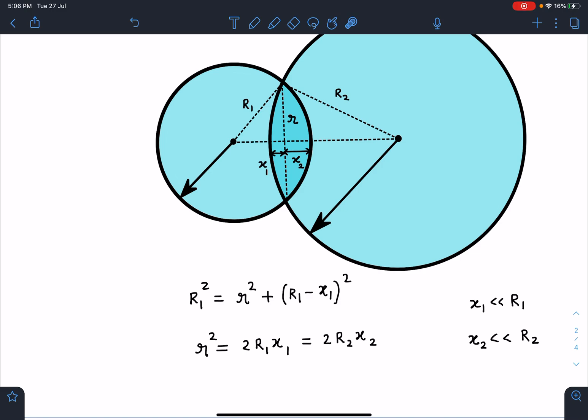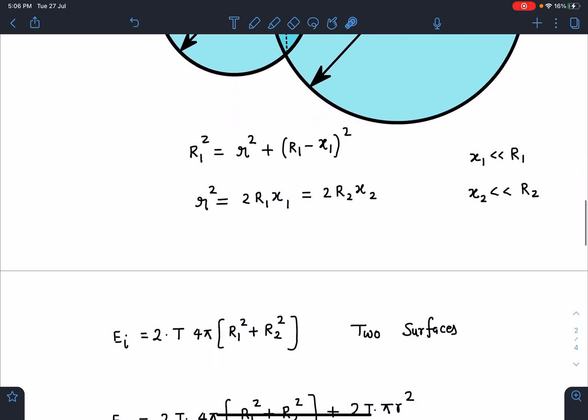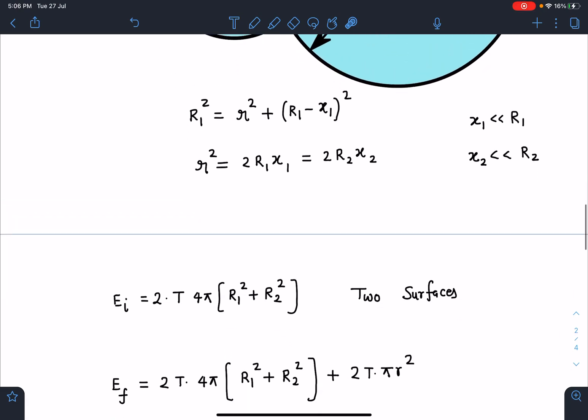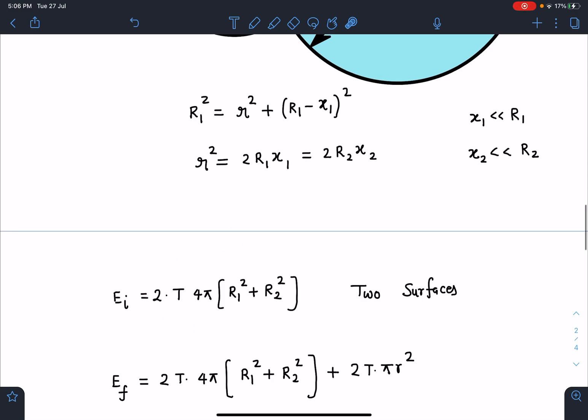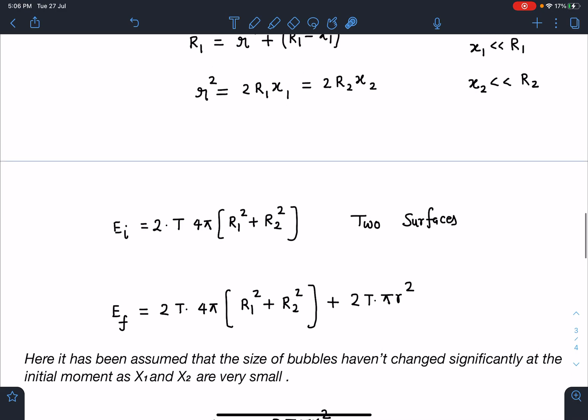Now after this, I'll write initial surface energy of the bubbles. Please remember there are two surfaces, so for one bubble it's T into 4πR1², then similarly T into 4πR2² for the second bubble, and double of that for two surfaces. So this will be the total surface energy initially.